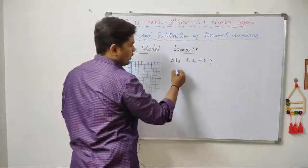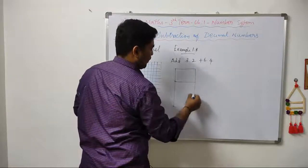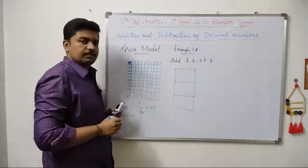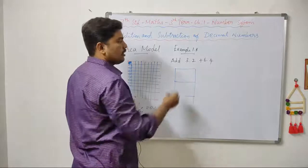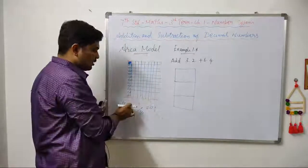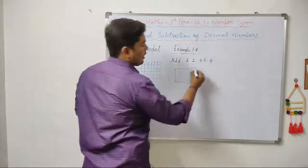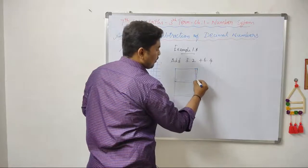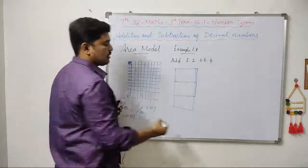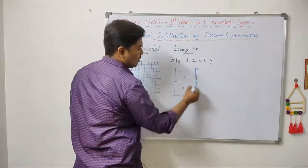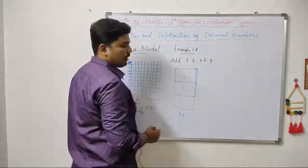The smaller number is 3.2 with whole part 3 and decimal part 2. I will draw 3 squares. Each square represents 1 unit. The decimal part is 2, meaning 2 strips of 1 by 10. So this part is 0.1, 0.1, and 0.1. The area represents 3.2.